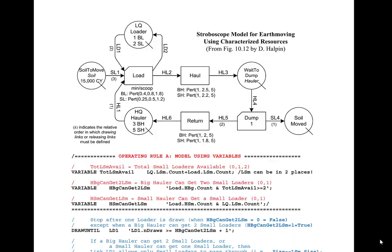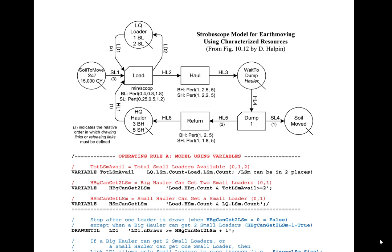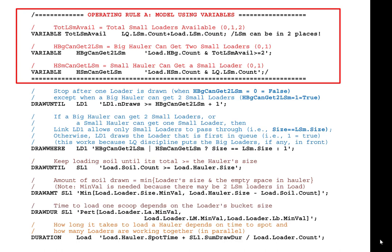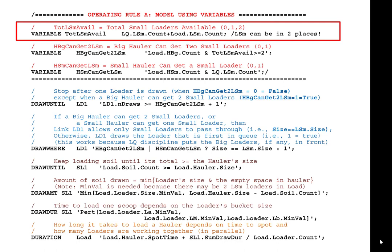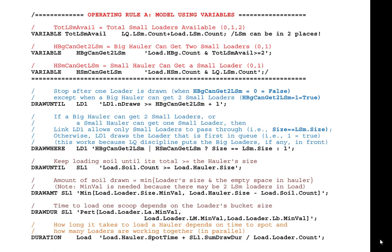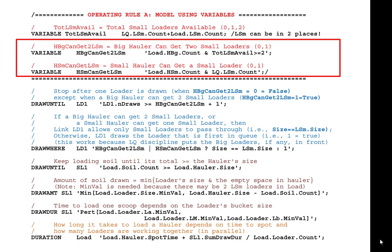This page describes the exact same model operating under rule A, but this time using variables instead of save values. The model using save values is easier to understand and implement, while the model using variables is a little more involved. This model controls the draw until and draw where of link LD1 through three variables: 'total small loaders available,' 'big hauler can get two small loaders,' and 'small hauler can get small loader.'